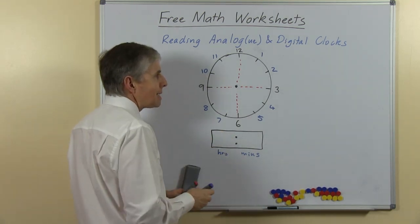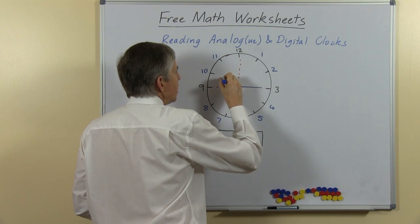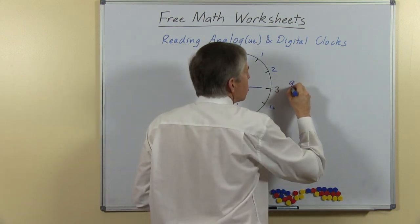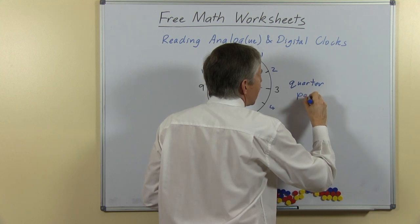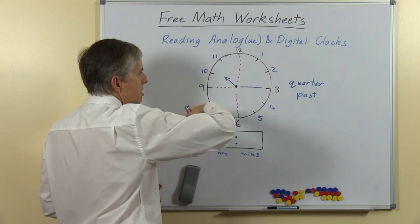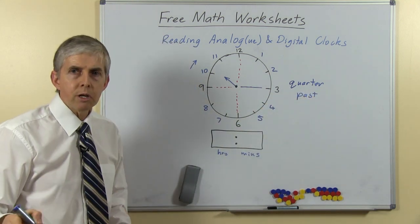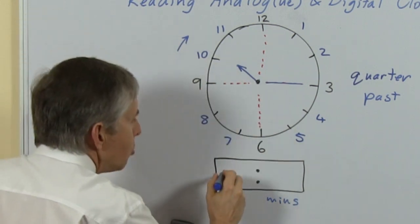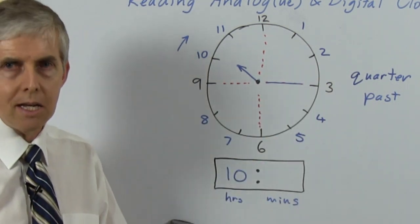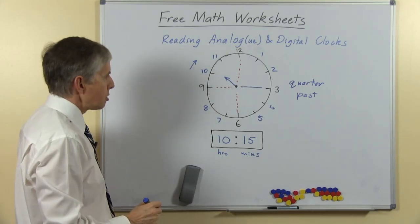When the minute hand moves around through a quarter, we have special times. Here is a time where the minute hand has moved a quarter of the way around the clock, and so we call this a quarter past one of the hours. In this case it's just come past the 10. The clock goes this way, in this direction. It's just gone past the 10, so this is a quarter past 10. How would we show that on a digital clock? Well the number of hours is 10, and then we've had a quarter of an hour. A quarter of 60 is 15 minutes, so we might call this time 10:15 or a quarter past 10.